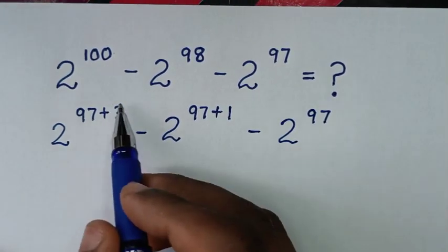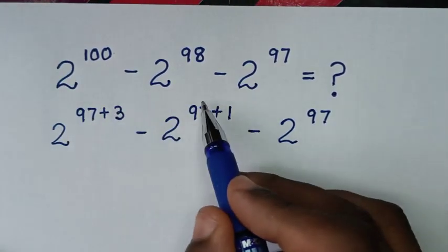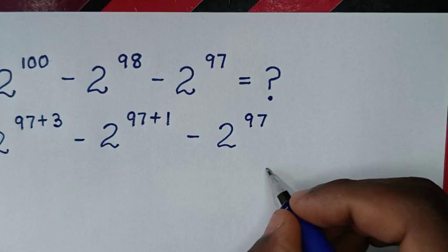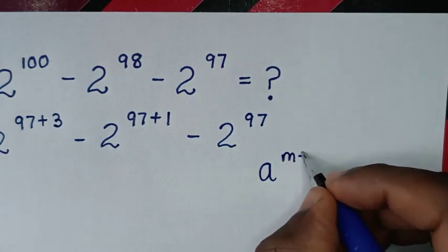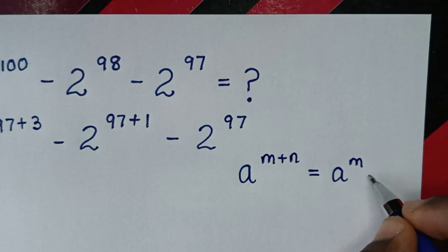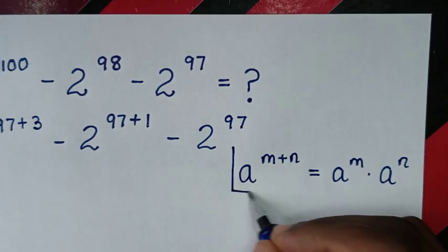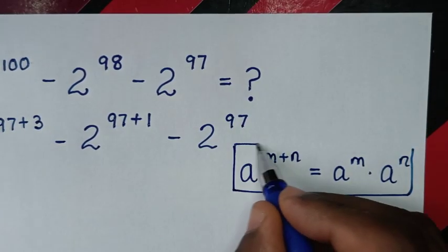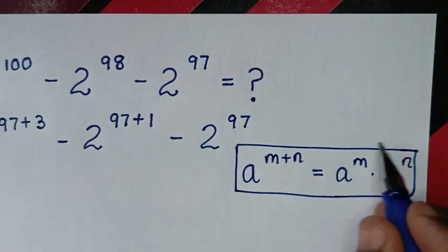Then in the next step, this exponent is in the form of a power of m plus n which is equal to a power of m times a power of n. So we will apply this form.